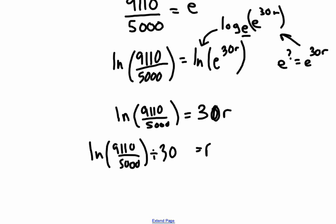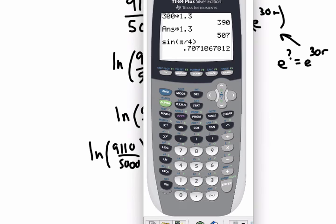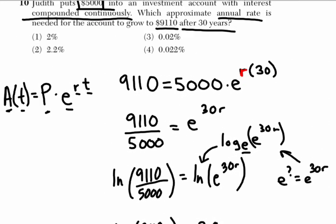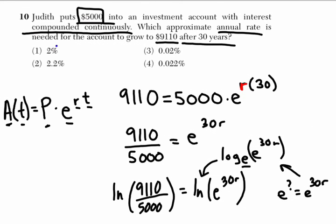And that is, for me, definitely a moment to take up the calculator. Let's clear off everything here. We do the natural log of 9,110 divided by 5,000. And that divided by 30. We get about 0.0199, which is 2% about, which is choice 1.